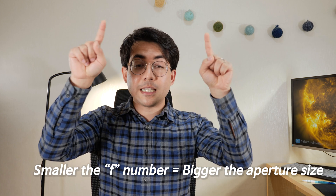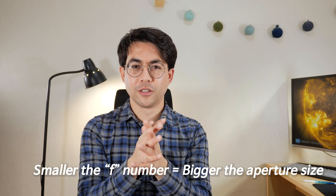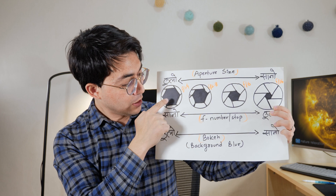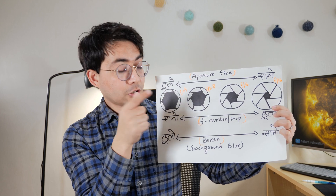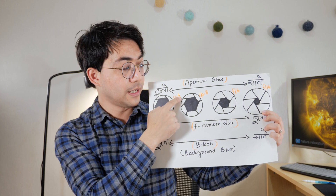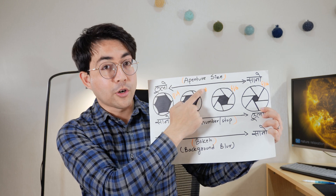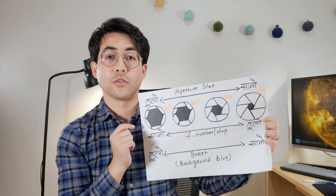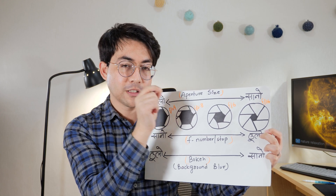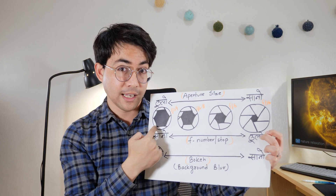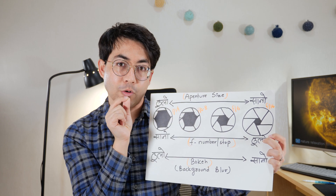The aperture opening is measured by f-numbers. The larger the opening of the lens, the more light comes in. When you set something like F1.4, you get a larger opening. As the f-number increases, the opening gets smaller and less light enters.